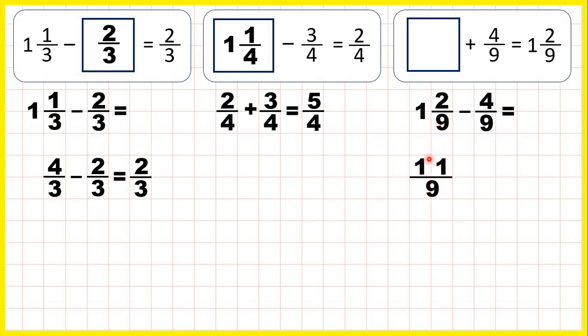That's eleven ninths because one times nine is nine plus two is eleven and our denominator stays the same. We're subtracting four ninths. So the denominator stays the same in our answer and eleven minus four is seven. So our missing number is seven ninths.